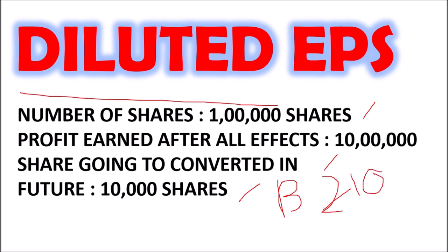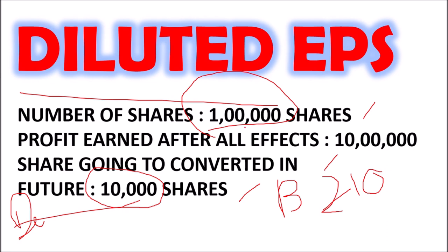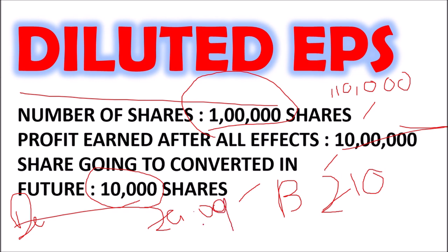To give a future effect, we calculate it now. We already have 1 lakh shares. The convertible instruments are going to convert into 10,000 shares in the future. So 1 lakh shares plus 10,000 shares gives 1 lakh 10,000 shares. Using the EPS formula — earnings divided by number of shares — 10 lakh divided by 1,10,000 gives Rupees 9.09. That means there is a deterioration in EPS. Earlier with 1 lakh shares the EPS was Rupees 10; after dilution it has come down to 9.09.